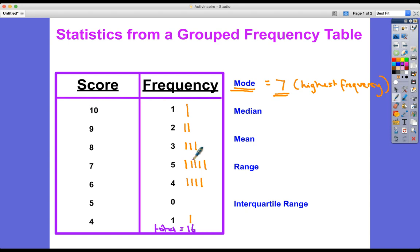And 1, 2, 3, 4, 5, 6, 7, 8. Between the 8th and 9th person, which is the median, is in this group here. So the median score is 7, same as the mode actually.